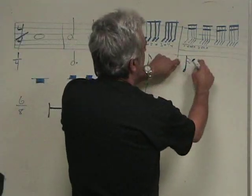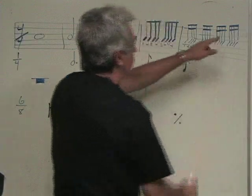So one e and a, two e and a, three e and a, four e and a. So that's what we have here. One e and a, two e and a, three e and a, four e and a. One measure of sixteenth notes.